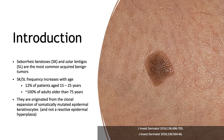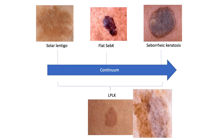Seborrheic keratosis and solar lentigos are one of the most commonly acquired benign tumors. Their frequency increases with age, being fairly uncommon in young patients, but increases to almost 100% in adults older than 75 years old. They are both originated from the clonal expansion of somatically mutated epidermal keratinocytes, and thus they are not a reactive epidermal hyperplasia. There is a continuum between solar lentigo, flat seborrheic keratosis, and seborrheic keratosis, and at any point you can have a lichen planus-like keratosis (LPLK), which will be reviewed in another webcast.